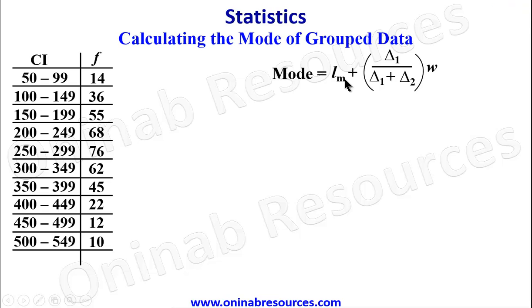LM is the lower class boundary of the modal class. Delta 1 is the positive difference between the frequency of the modal class and the frequency of the class before it. While delta 2 is the positive difference between the frequency of the modal class and the frequency of the class after it. We still have our w as the class width or class size of the modal class.